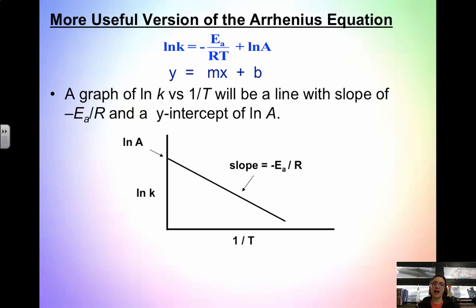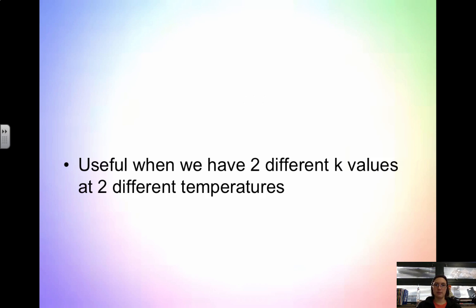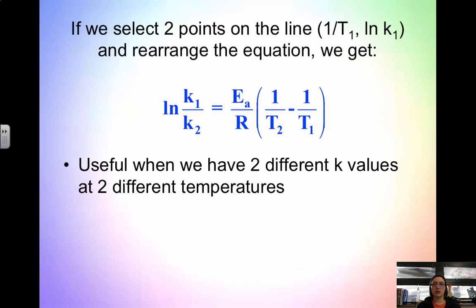The linearized Arrhenius equation is the more useful version — you use it to determine the activation energy of a reaction by comparing k to temperature. If we select two points on the line and rearrange the equation, we get a two-point form. This is useful if we have two different k values and two different temperatures and we want to find the activation energy, even without a full graph.